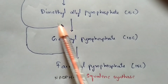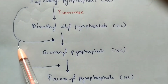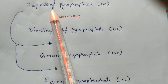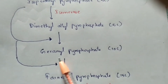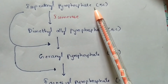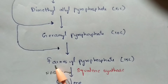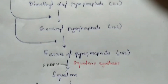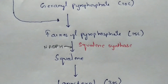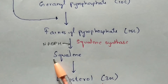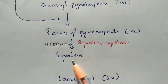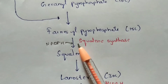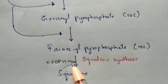Geranyl pyrophosphate, the 10-carbon compound, combines with isopentenyl pyrophosphate, the 5-carbon compound — giving 10 + 5 = 15 carbons — to form farnesyl pyrophosphate, a 15-carbon compound. Next, farnesyl pyrophosphate uses the enzyme squalene synthase to form squalene, with NADPH and oxygen also being utilized.